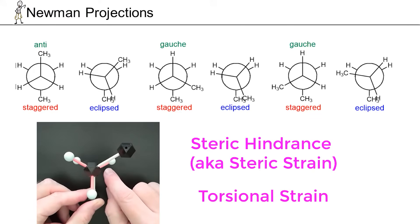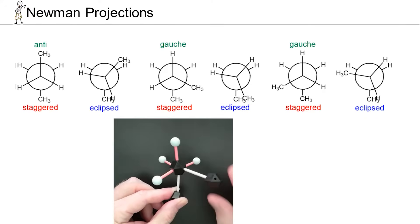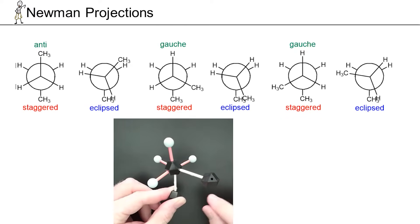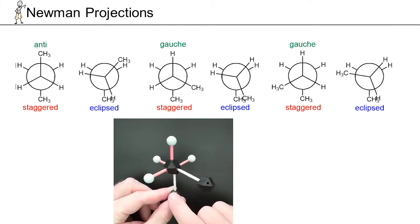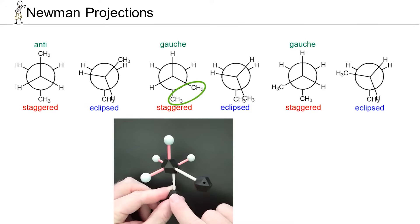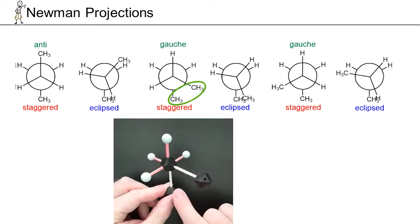If we rotate another 60 degrees, we're back to another staggered conformation. This staggered is not as good as the anti-conformation we had just a second ago, because this carbon and this carbon are now only 60 degrees apart. Being only 60 degrees apart, we call that a gauche interaction, so there's more steric hindrance associated with these gauche interactions than we had in the anti-conformation. The bigger these groups are in the gauche interactions, the higher energy they are. We'll often rank different Newman projections based on how many gauche interactions a molecule has, as well as how large the groups involved are. Keep in mind, gauche interactions only ever occur in a staggered conformation — we'd never talk about them in an eclipsed conformation.